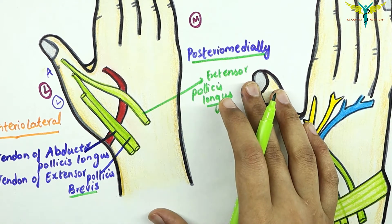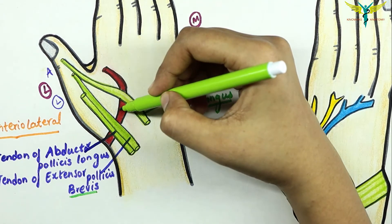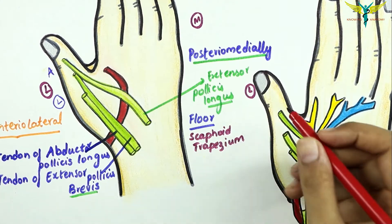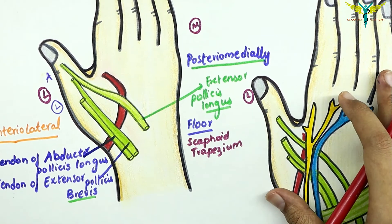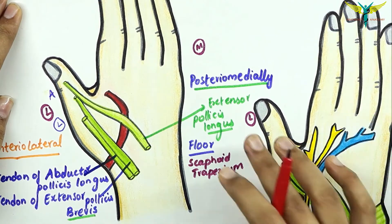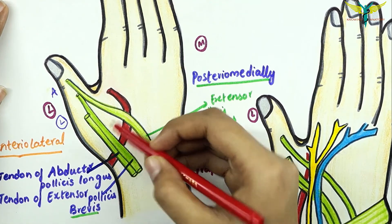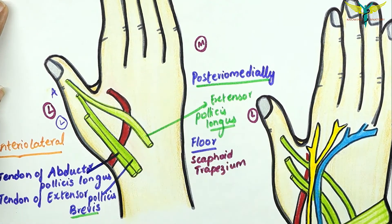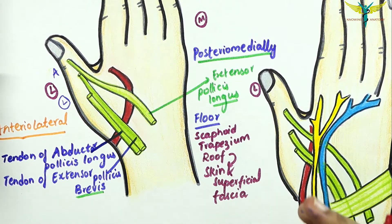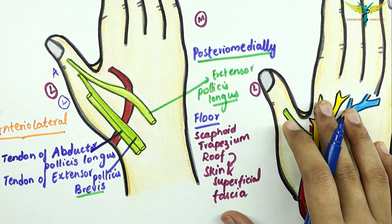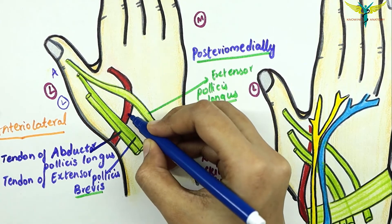The floor of the anatomical snuff box is formed by the scaphoid and the trapezium, which are carpal bones. The roof of the anatomical snuff box is formed by the skin and the superficial fascia. These are the boundaries, and now coming to its contents — the main content is the radial artery.